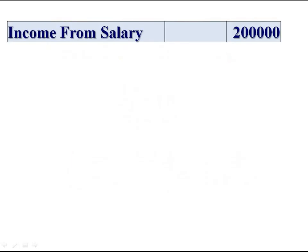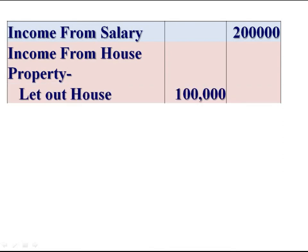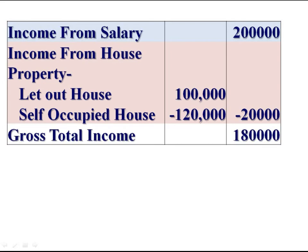For example, if an individual's total income includes income from salary Rs. 2 lakh, and income from house property — he has two houses: a let-out house with income Rs. 1 lakh, and a self-occupied house with a loss of Rs. 1 lakh 20,000. The loss of Rs. 1 lakh 20,000 is adjusted with the income of Rs. 1 lakh, giving minus Rs. 20,000. This remaining loss of Rs. 20,000 is set-off with income from salary, and he gets gross total income of Rs. 1 lakh 80,000.